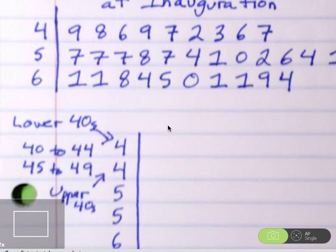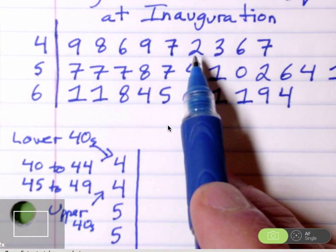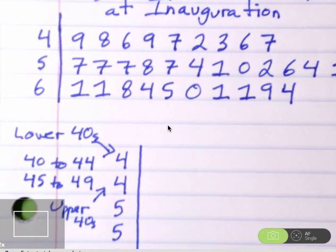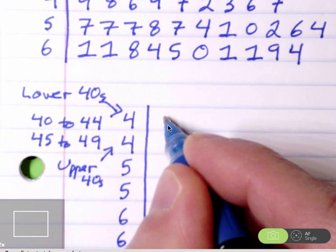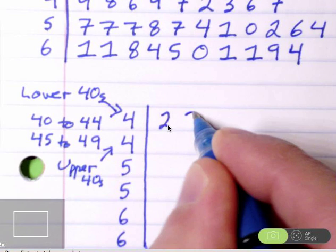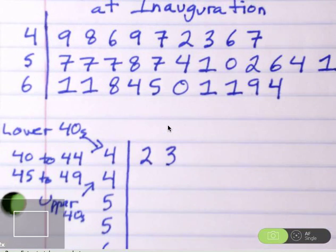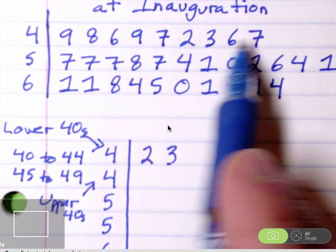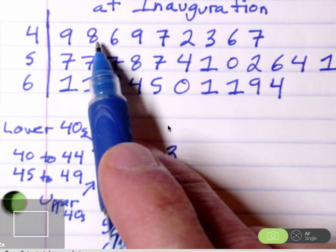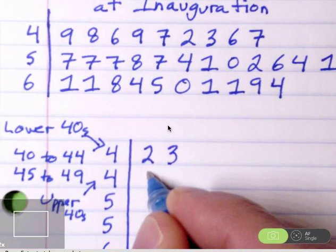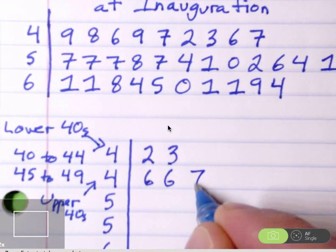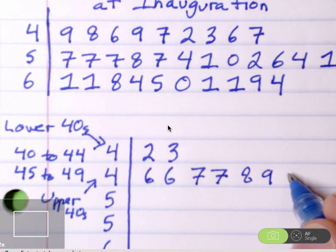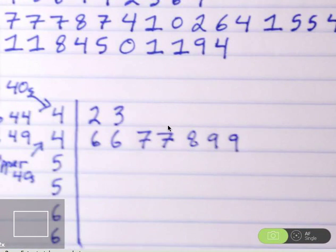So I'm going to go up here to my original graph. My smallest leaf is a 2, and next is a 3. Those are the only leaves that are from 0 to 4. So in this first group from 40 to 44, I'm going to put just a leaf of 2 and a leaf of 3. So I've taken care of the 2 and the 3. The remaining leaves, it looks like in order, there are two 6s, there are two 7s, there is an 8, and two 9s. So again, I'll put them in order with the two 6s, the two 7s, the 8, and the two 9s. So this process is called splitting stems.